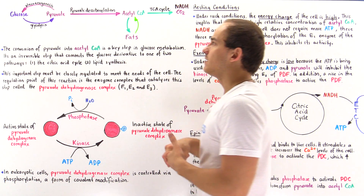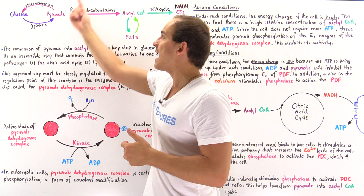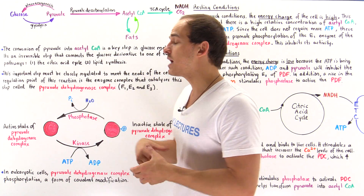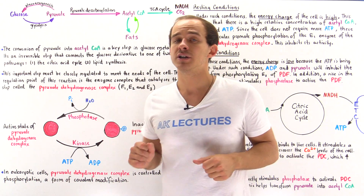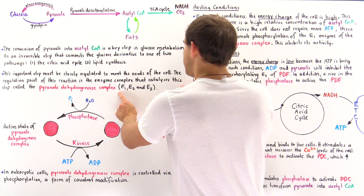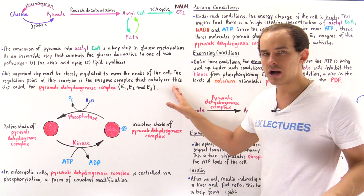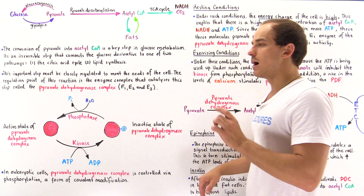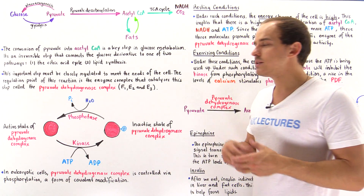One way by which the cells can regulate this pathway is by regulating the enzyme that catalyzes this step. Pyruvate decarboxylation is regulated by an enzyme complex known as pyruvate dehydrogenase complex, which actually consists of three different types of enzymes: E1, E2, and E3. E1 is also known as pyruvate dehydrogenase. E2 is also known as dihydrolipoyl acetyltransferase. And E3 is known as dihydrolipoyl dehydrogenase.